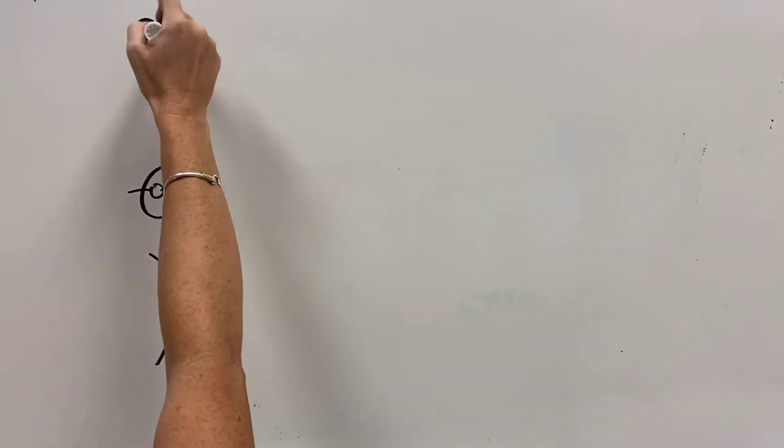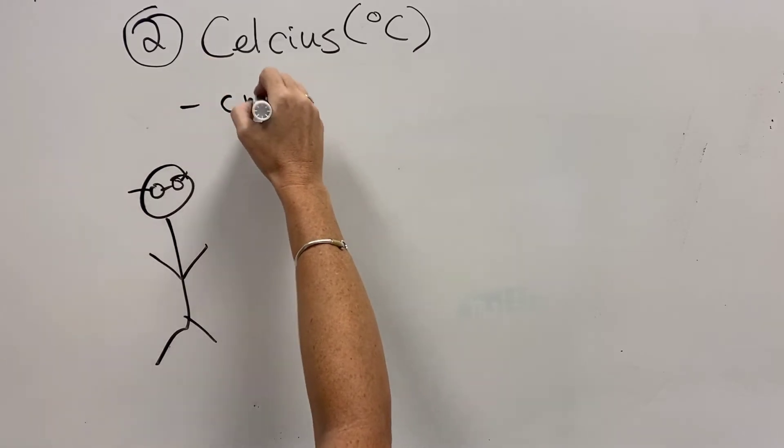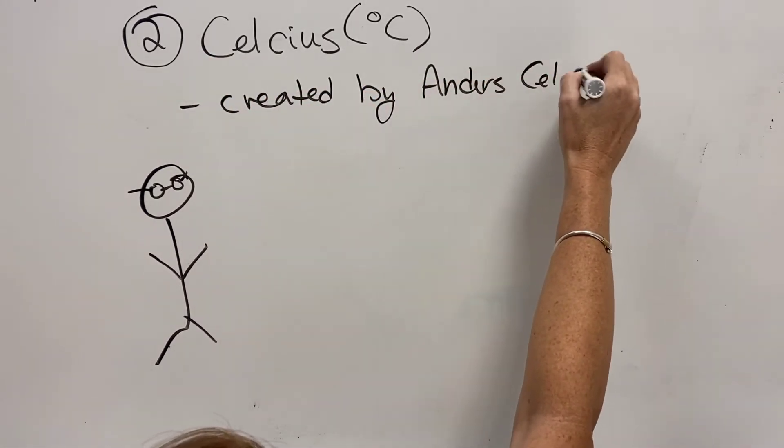But as you can see, zero being the coldest day in Danzig, Germany in 1708, with a 32 and a 212 are kind of hard to understand.